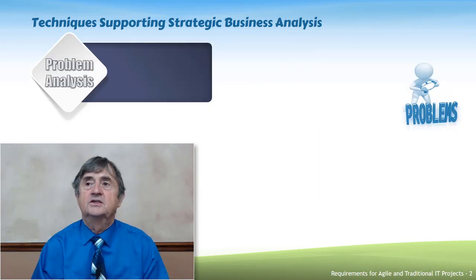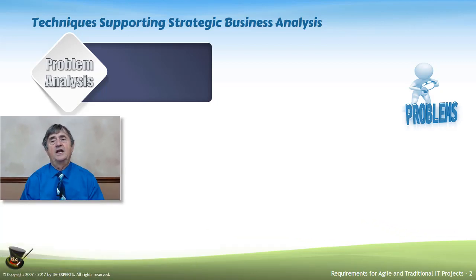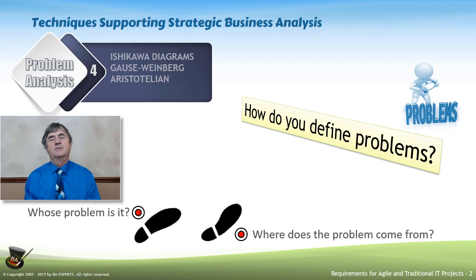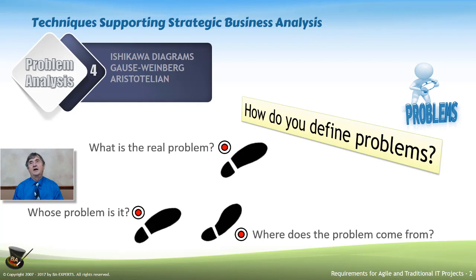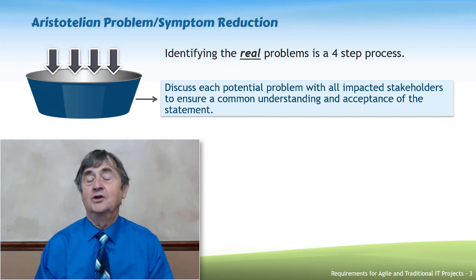Another technique common in strategic business analysis is business problem analysis — a way of identifying what a problem is, who is experiencing it, and what caused it. Tools include Ishikawa diagrams or Goss-Weinberg problem definition, which is a simple set of four questions to answer in order to come up with the real problem. From there, you apply Aristotelian problem symptom reduction to identify the actual root problem.